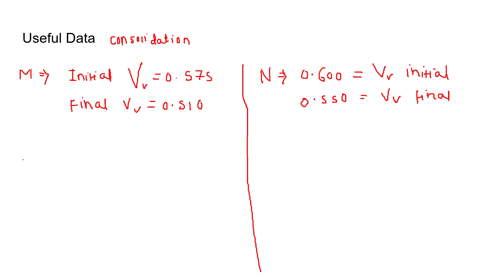So delta sigma, the change in pressure or change in effective stress, this value will be 0.575. This value will be required in order to solve.